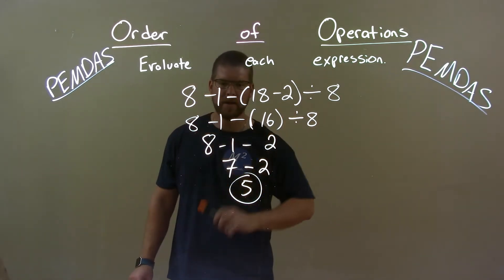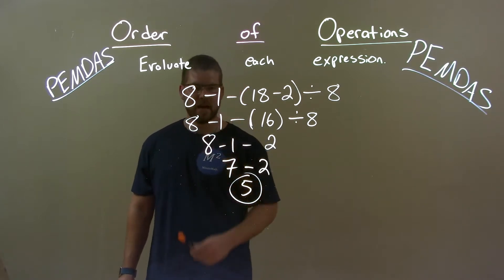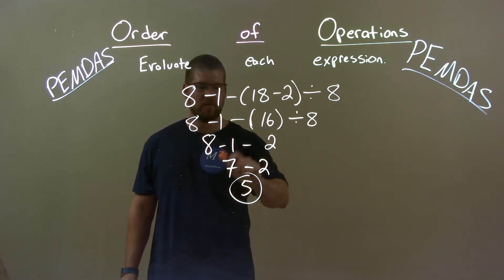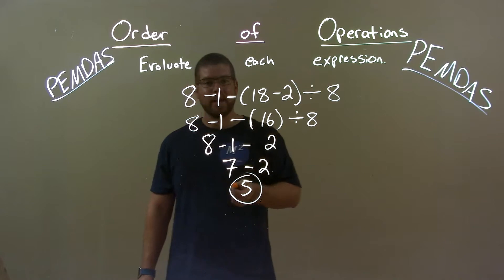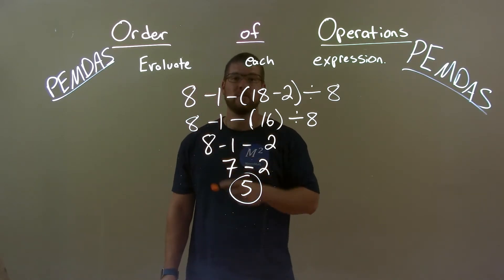So let's read left to right. 8 minus 1 is 7. Bring down the minus 2. 7 minus 2 is 5. So again, final answer here is just 5.